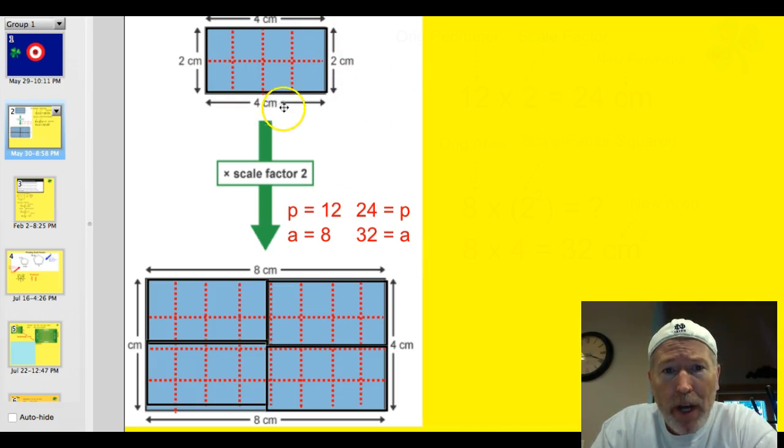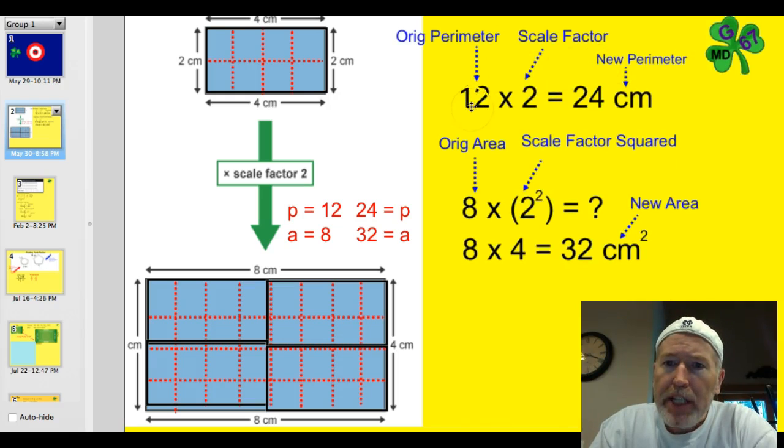Let's look how we could find, given this rectangle and the scale factor, how we could find the area and perimeter of this new one if these numbers weren't here. Here's the way it works. You take the original perimeter of this one, which is 12, and you multiply it by the scale factor of 2. You get the new perimeter, 24 centimeters.